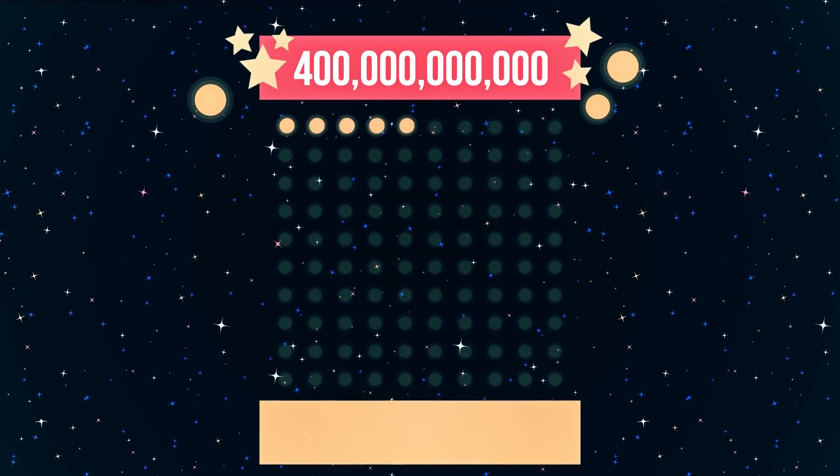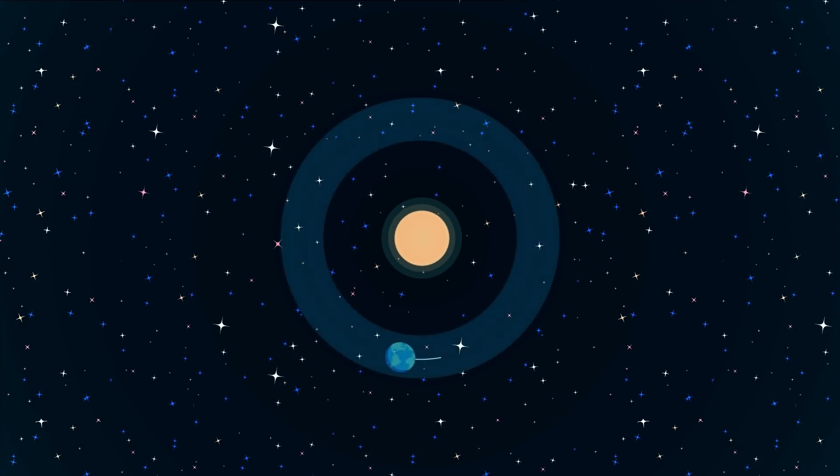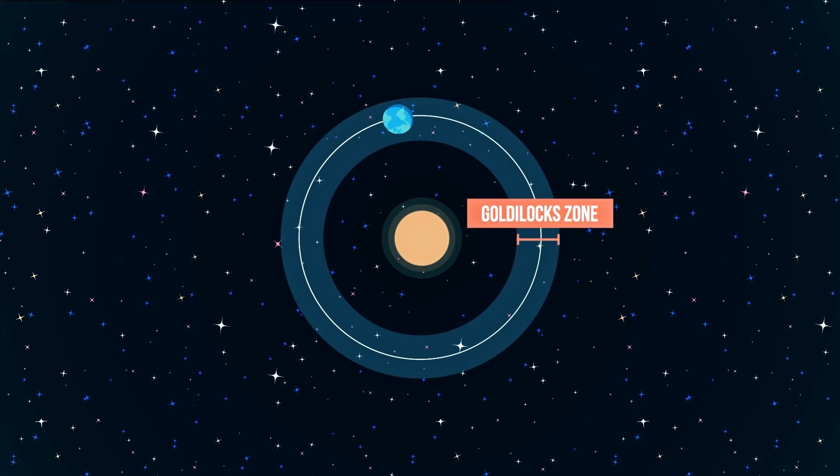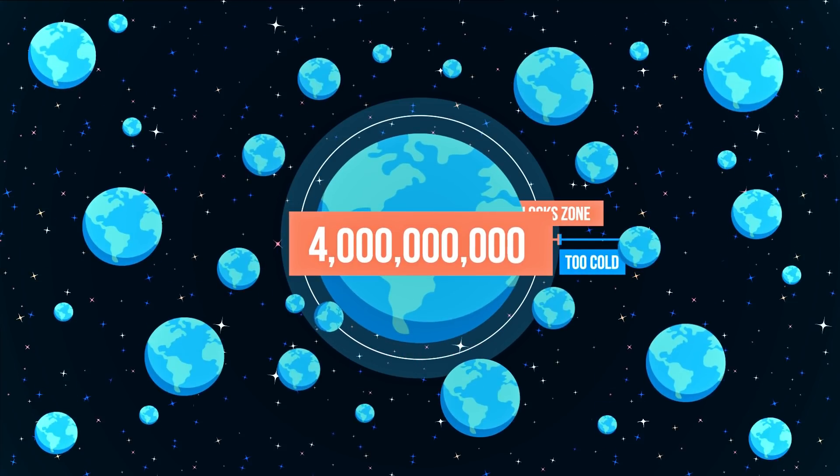Estimations suggest there are roughly 20 billion stars composed just like that of our Sun. If just one in five has an Earth-like planet in orbit within the habitable zone, also known as the Goldilocks zone, where it is not too hot or too cold, that would give us 4 billion planets that could potentially support life.